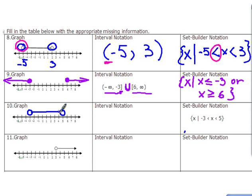Fabulous. We have graph. We have set builder notation. And now interval notation. We know that the minus 3 and 5 are the end points and they are not included in the interval. So we will be using the parentheses. Wonderful job.